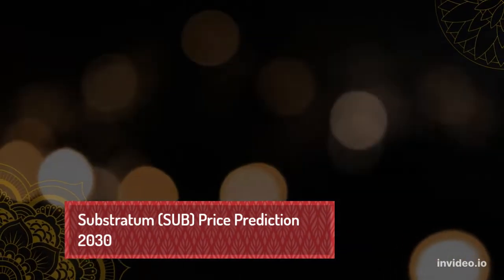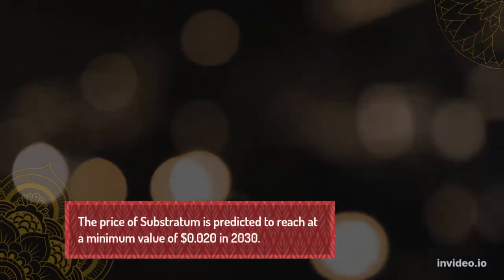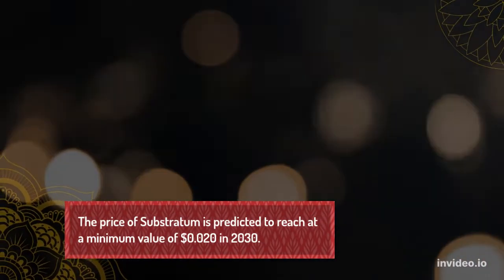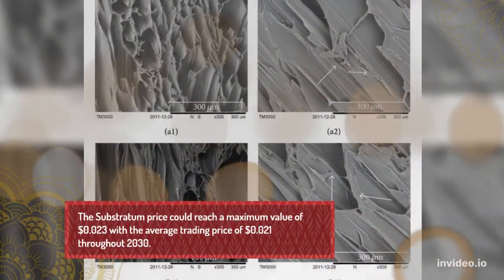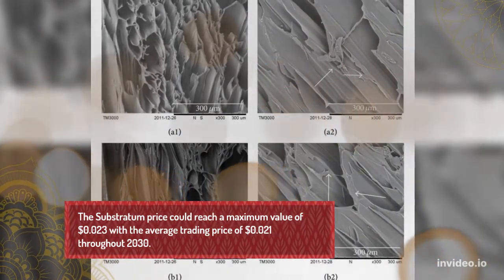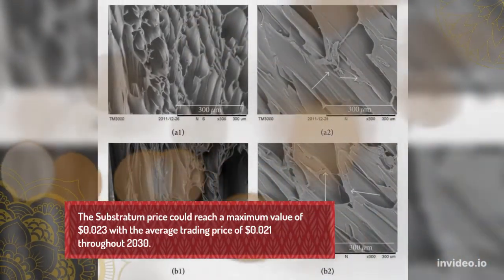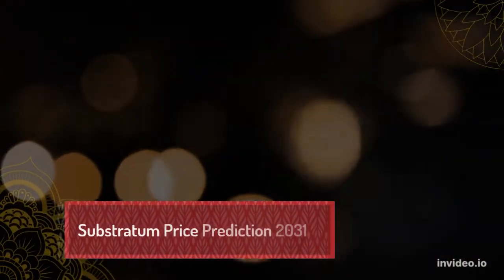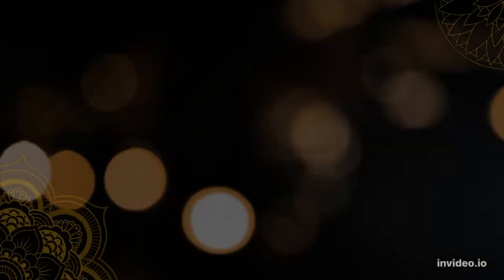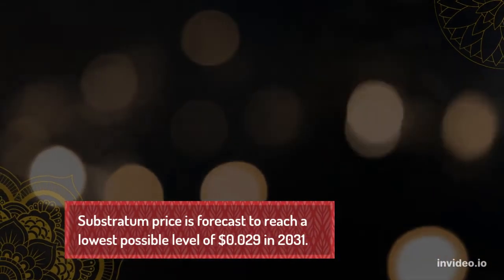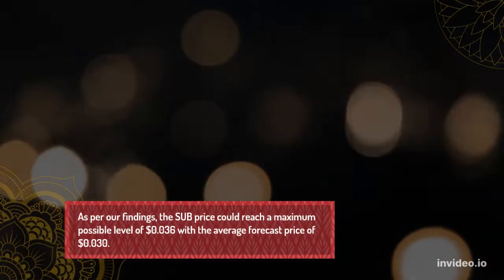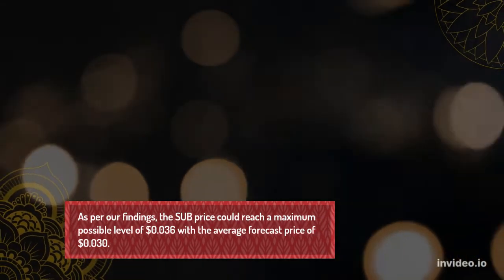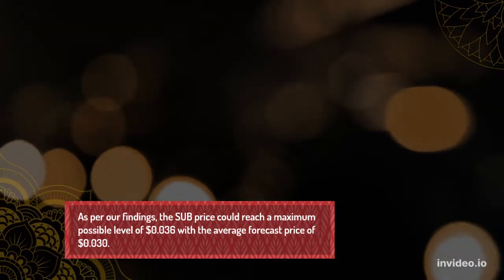Sub-Stratum Price Prediction 2030 and 2031: Sub-Stratum price is forecast to reach a lowest possible level of $0.029 in 2031. As per our findings, the Sub-Stratum price could reach a maximum possible level of $0.036 with an average forecast price of $0.030.